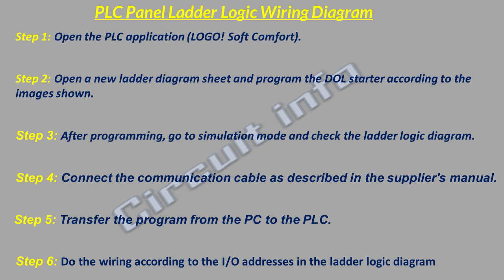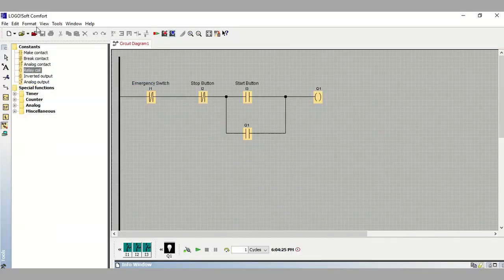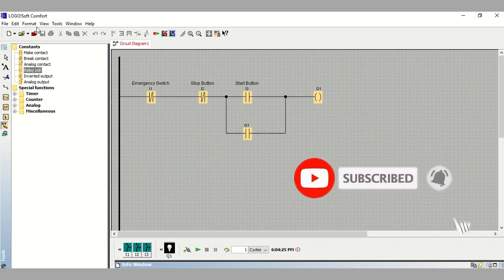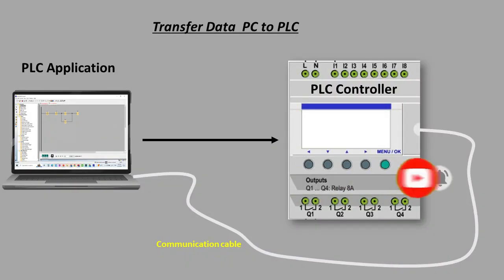Step four: enter simulation mode and check the drawing, then verify the ladder logic diagram to ensure it functions correctly. In simulation mode, run the ladder diagram to check the operation of the direct online starter. This step helps you confirm the logic is working as expected and troubleshoot any issues. Once the ladder logic is confirmed to be working, connect the communication cable between your PC and the PLC.